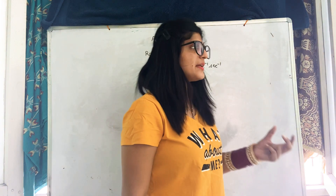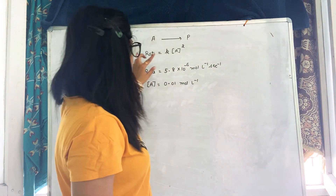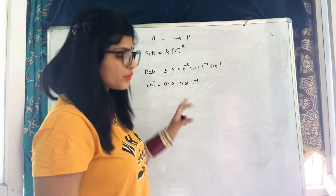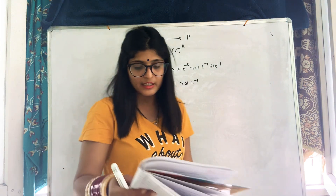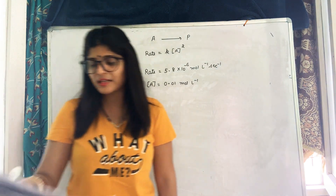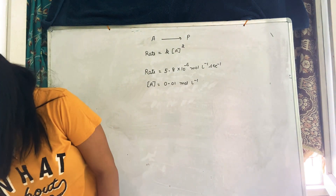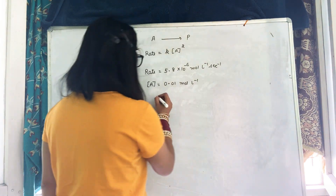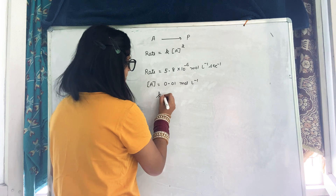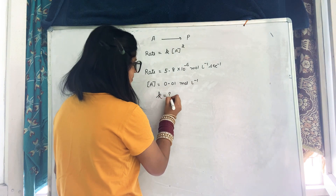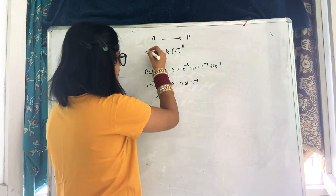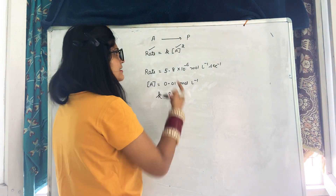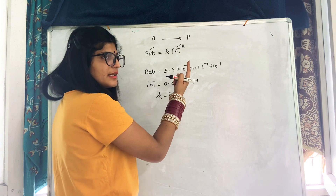Here A is the monomer, and its concentration is given. We need to calculate the rate constant k. Rate value and A concentration are given, so we can find k directly.